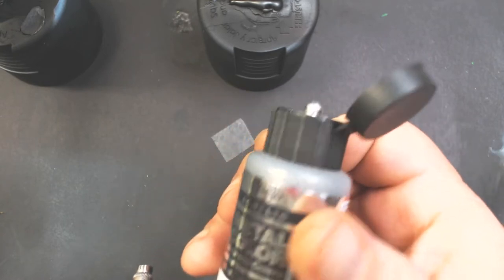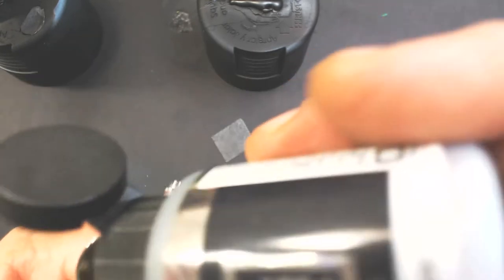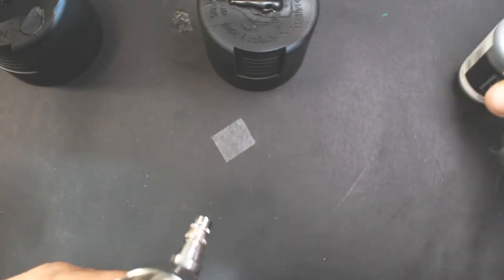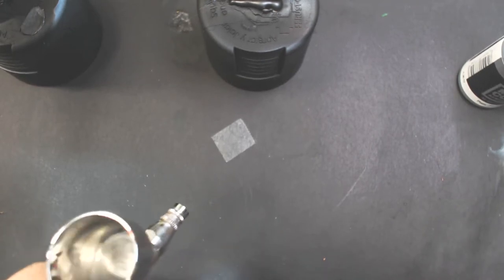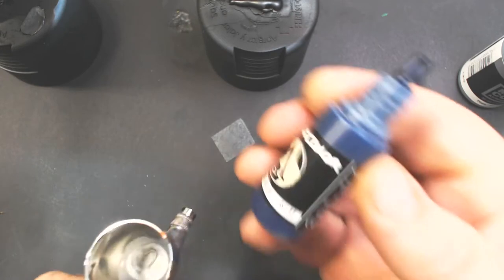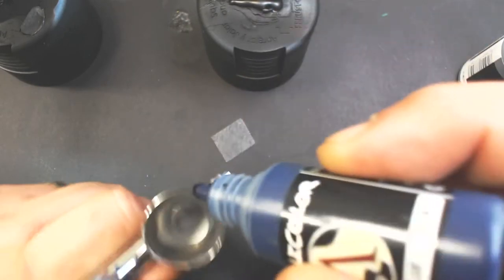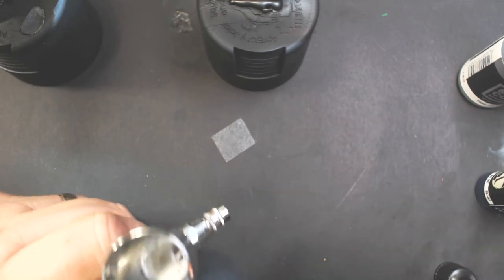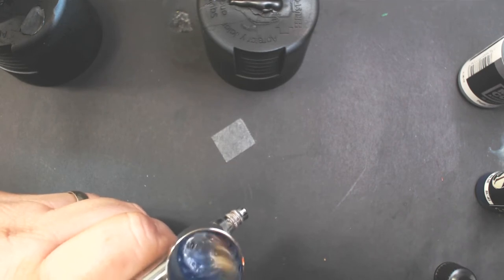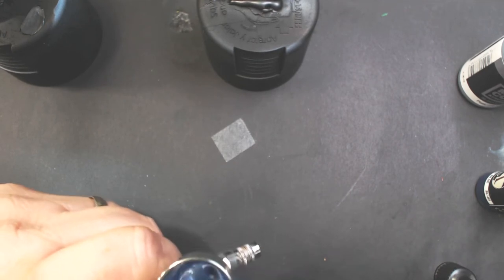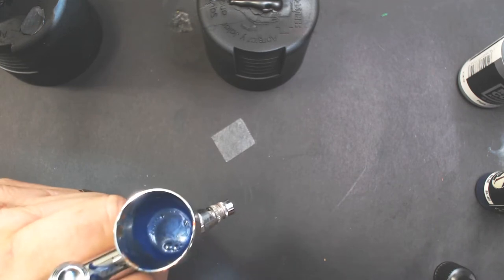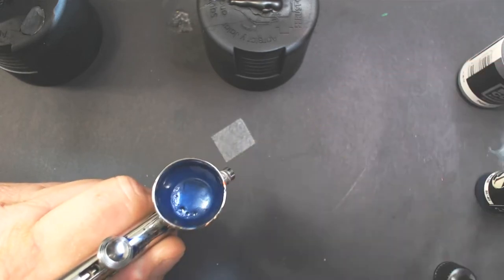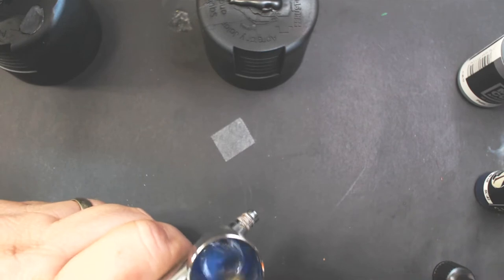And to my airbrush I'm going to add some Vallejo Metal Color Silver or any light steel color. And to that I'm going to add some Scale 75 Inktense Blue ink, just two or three drops, and mixing that very well. I want a nice dark blue metallic color. And add a couple drops of Airbrush Thinner.